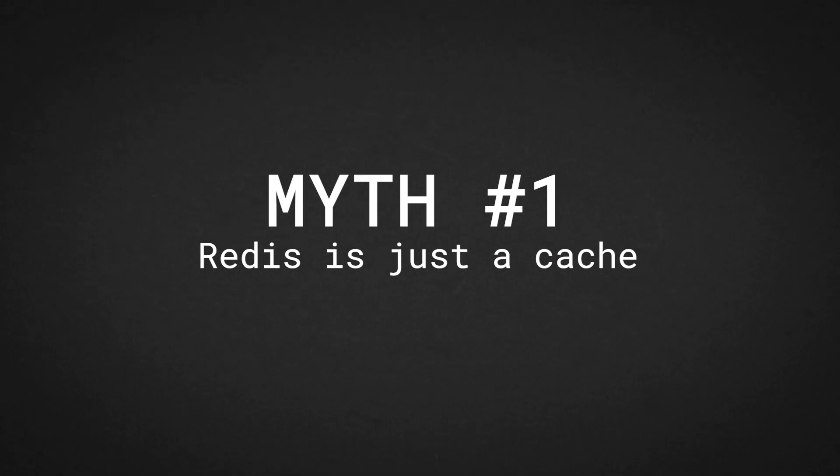Myth number one: Redis is just a cache. This one is very common. Redis is great at being a cache — it's fast, it's reliable, and almost everyone uses it as a cache layer for their main data store. Redis is great at taking queries from hundreds of milliseconds down to less than a millisecond. But the truth is, you can use Redis and its many data structures for a lot more than just caching.